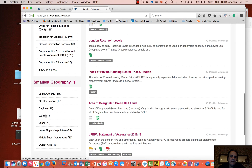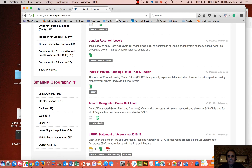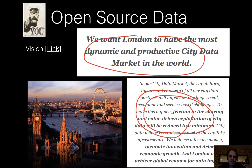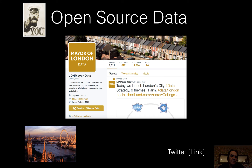We can look at London in terms of regions, wards and boroughs. The great thing about the London data infrastructure is that they want to be world-leading. They want to create a dynamic and productive city environment, reduce friction in sharing data, provide value-added exploitation of it, use it as a driver for businesses, and have significant impact on data usage. There's a great push forward with data sharing across London.